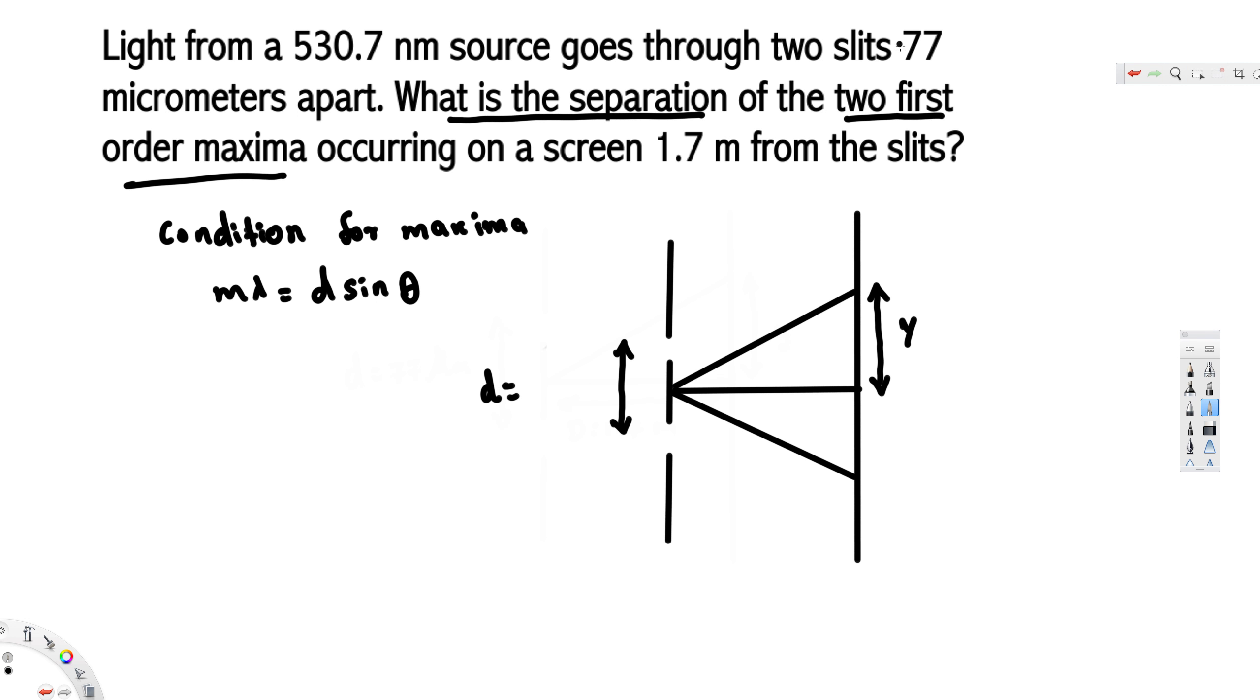This is going to be the slit separation that is given by small d, and that's given in the question: 77 micrometers. And from the slit to the screen, the distance is given as 1.7 meters. So from here to here, this is 1.7 meters. Let's call this one capital D. Capital D is 1.7 meters.